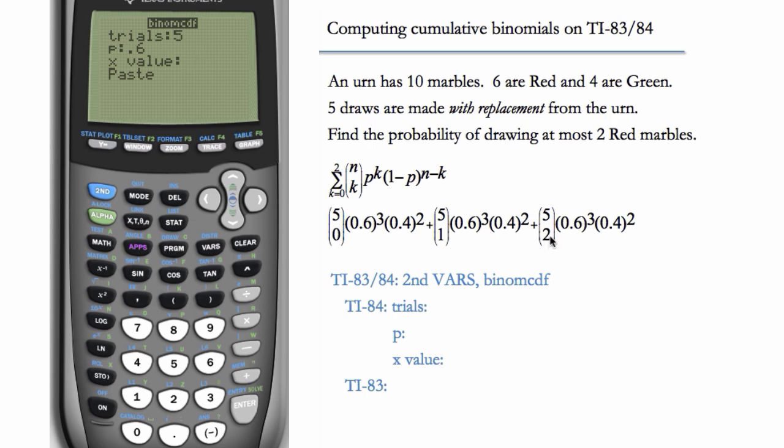So here our x value is going to be two. So this binomcdf with an x value of two gives you the probability of at most two.